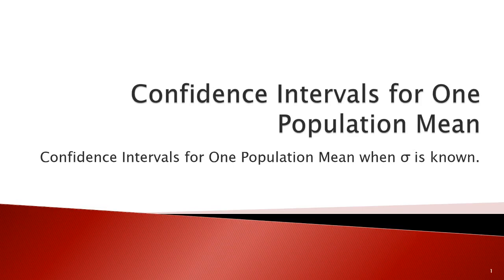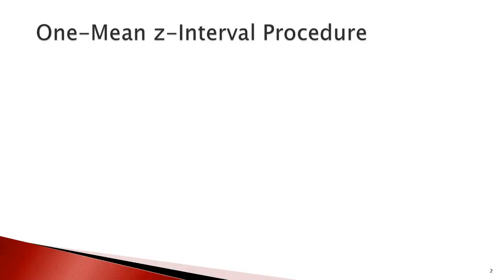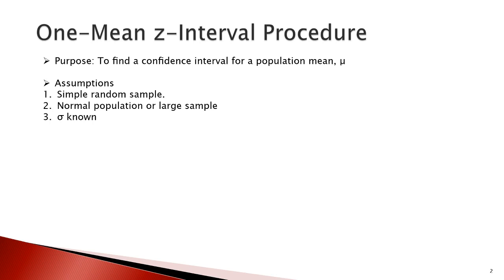Hello everyone, this is the second section of the chapter on confidence intervals for one population mean. One of the methods to obtain information on population mean is by confidence interval estimates, as discussed in the previous section. In this lesson, we are going to obtain confidence intervals for population mean when sigma is known.